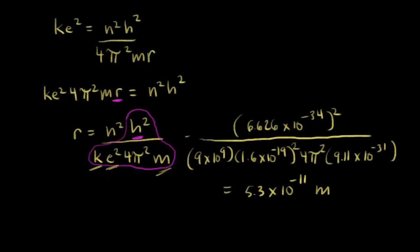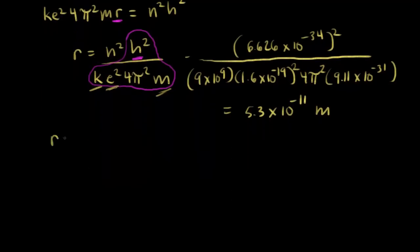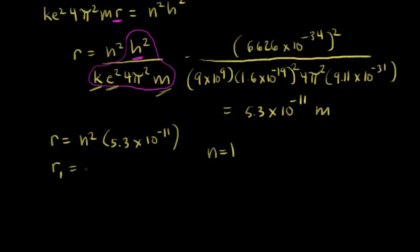When you do that calculation, you'll see that it comes out to 5.3 times 10 to the negative 11. If you work out all the units, you get meters. So go ahead and do that calculation yourself and you'll get that number. That's a very important number. Plugging that into what we have, the radius equals n squared times 5.3 times 10 to the negative 11.